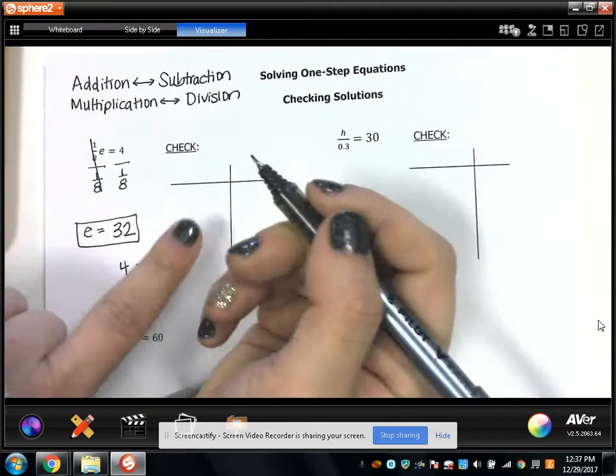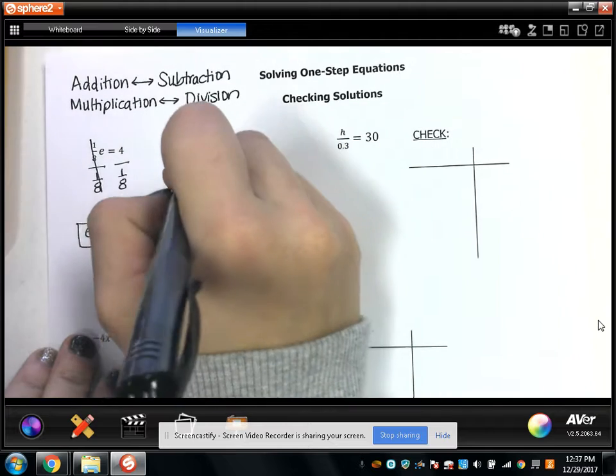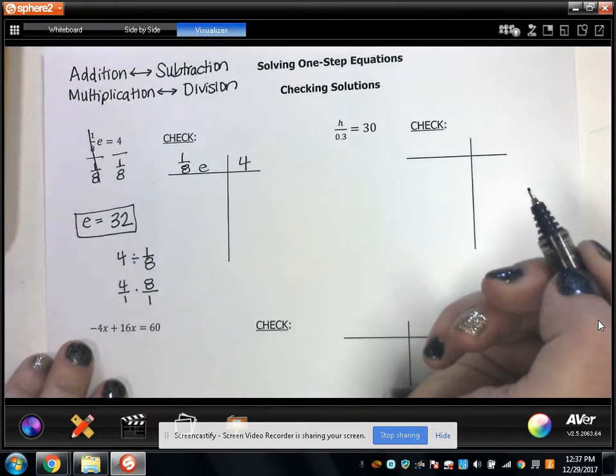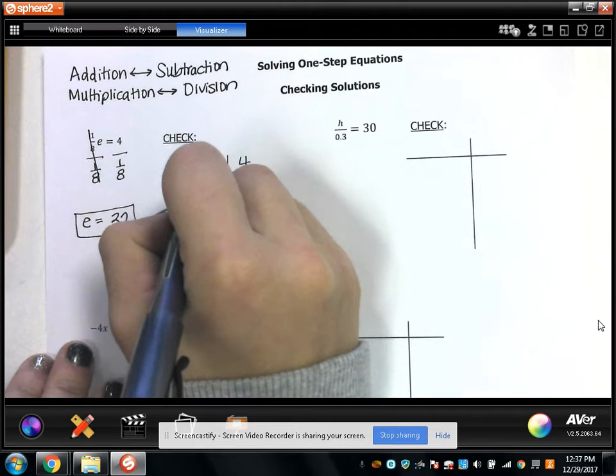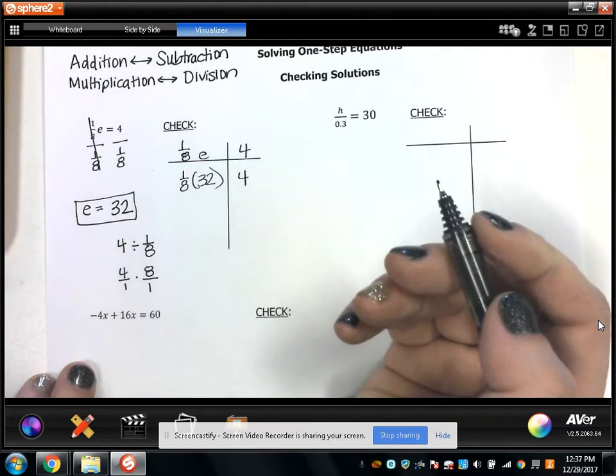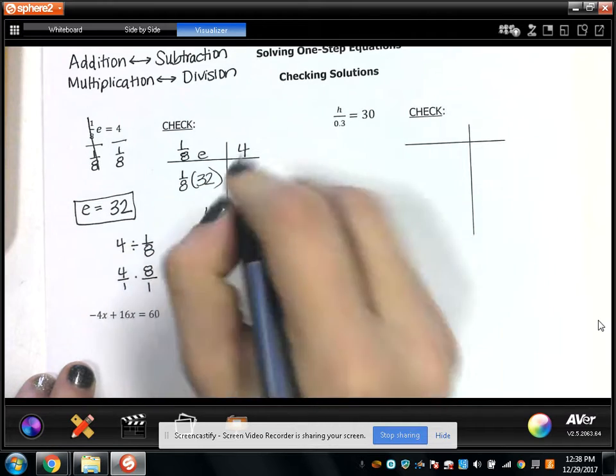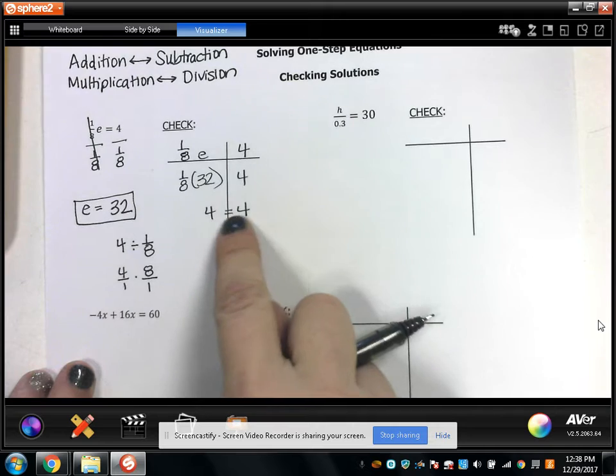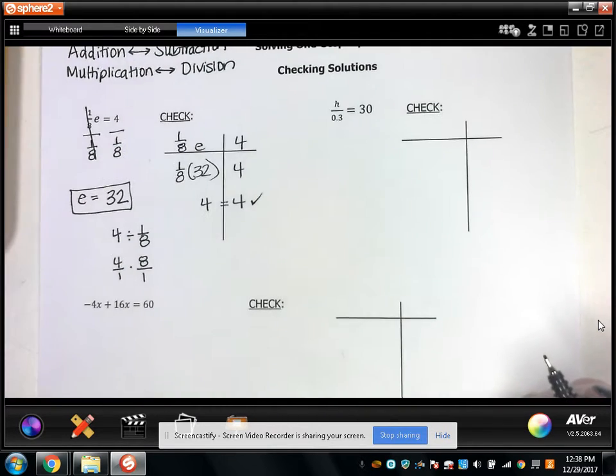So to check my answer, the original equation goes on top of the T chart. I'm going to say 1 eighth E has to equal 4, and then I plug in what my answer is for E. 1 eighth of 32 has to equal 4. And what is 1 eighth of 32? It's 4. So my last step of my check is always me writing whether or not I get the same number on both sides of the equation, which I did. If I get the same number, then that means my answer checks out. It's the correct answer.